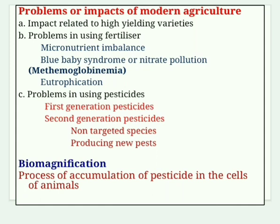Biomagnification: pesticides like DDT and dioxins do not decompose and are consumed by animals, becoming concentrated and stored in animal fat, then magnified and transferred through the food chain. The process of accumulation of pesticides in the cells of animals and plants is known as biomagnification or biological magnification. These pesticides in the food chain enhance the risk of cancer and suppress the immune system.